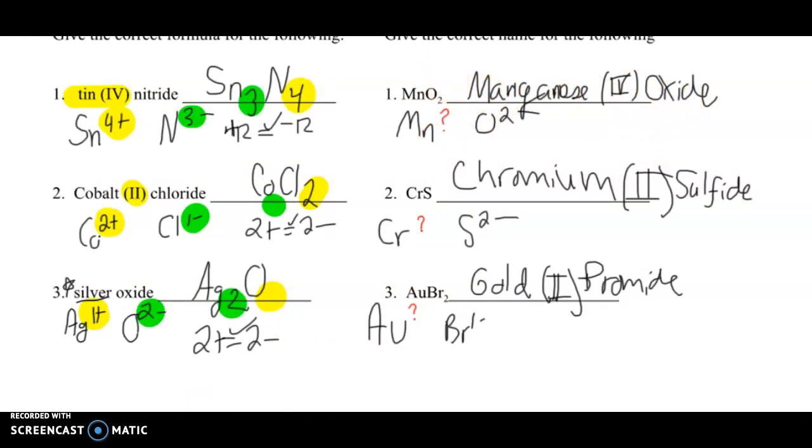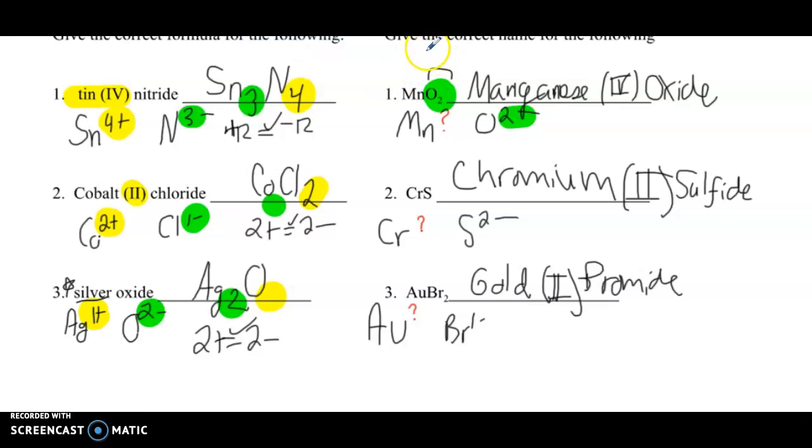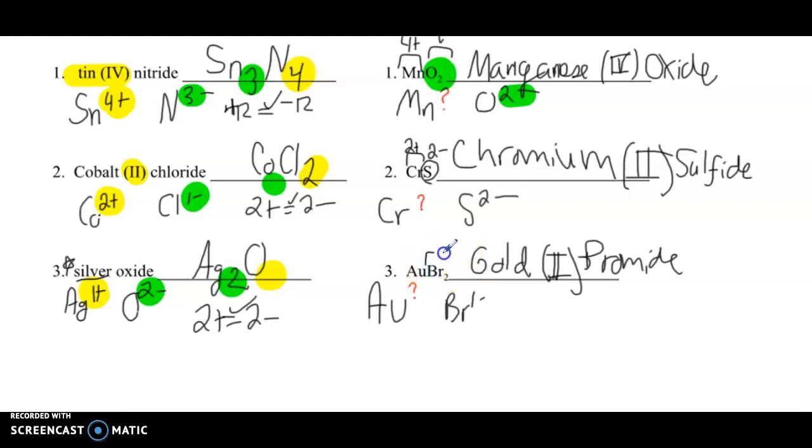You might have struggled with this side. So remember, you always, always, always want to start with the anion and what you know. So we know that oxygen is always going to be a 2 minus. And there's 2 of them. So what is the charge on the negative part of this ionic compound? We've got a 4 minus right here. That means that this part has to be a 4 plus. So there's only one manganese. That makes it manganese 4 oxide. On my next one, we want to, again, focus on the anion. Sulfur is always a 2 minus. There's just one sulfur. So it's 2 minus on this side. That means that this part, the cation, has to be a 2 plus. There's only one chromium. It's got to be chromium 2 sulfide. And then we've got one more, bromine. Bromine's charge is always a 1 minus. But there's 2 bromine. So the anion charge here is 2 minus. That means the cation total charge has to be a 2 plus. There's only one gold. So it's going to be gold 2 bromide.